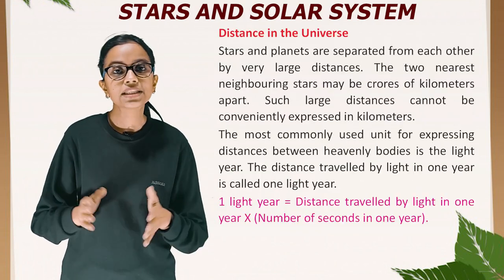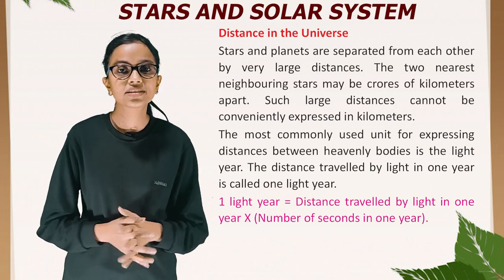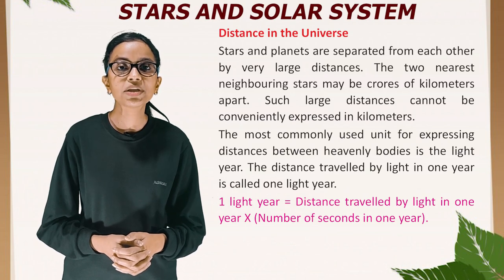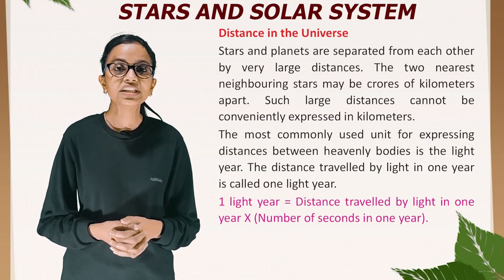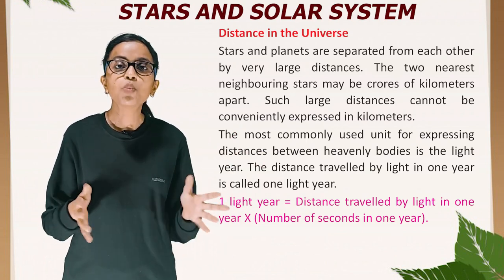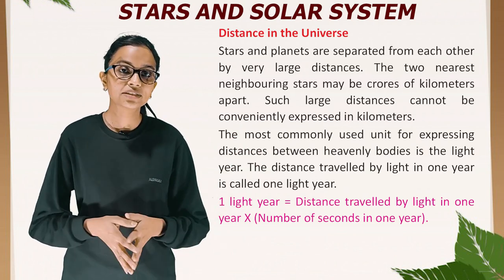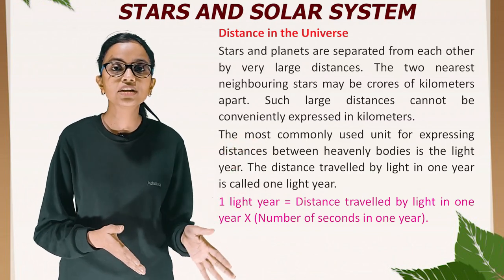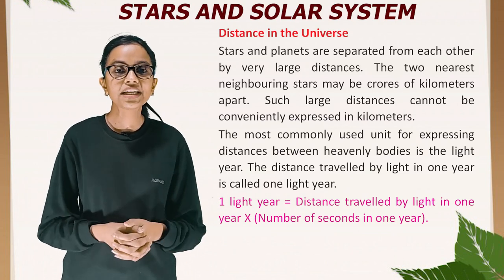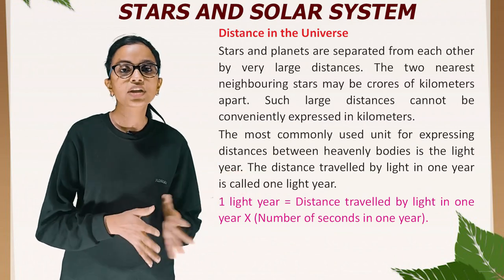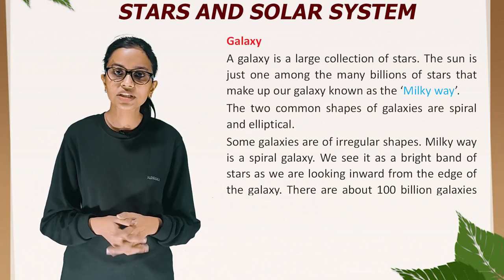Stars and planets are separated from each other by very large distances. Two neighboring stars may be crores of kilometers apart; such distances cannot be conveniently expressed in kilometers. The most commonly used unit for expressing distances between heavenly bodies is the light year. One light year is the distance traveled by light in one year, which equals the speed of light multiplied by the number of seconds in one year.